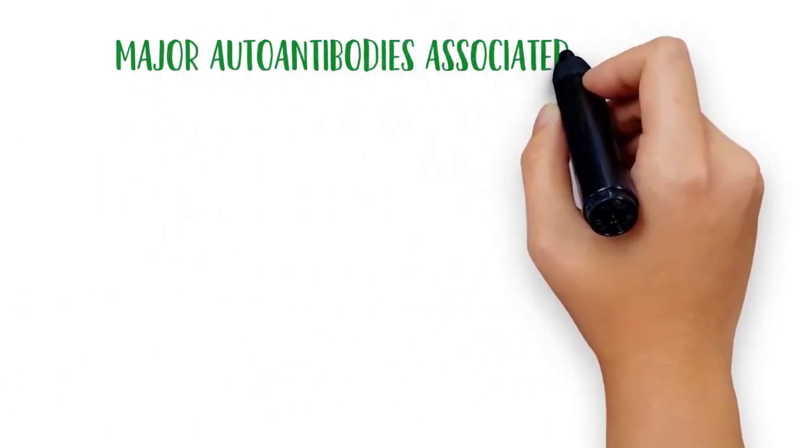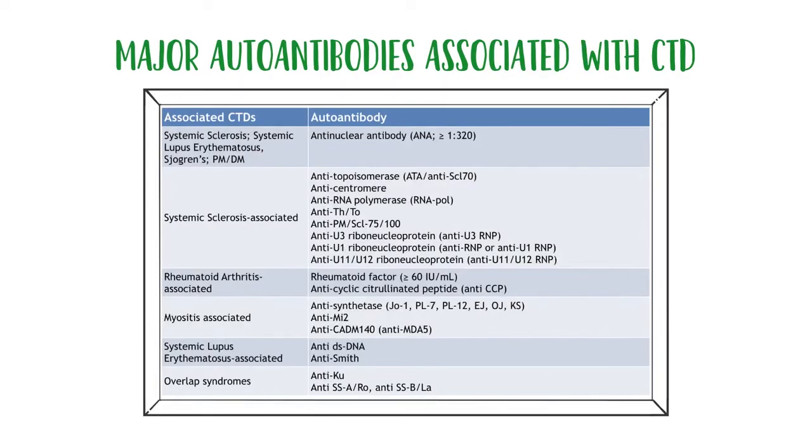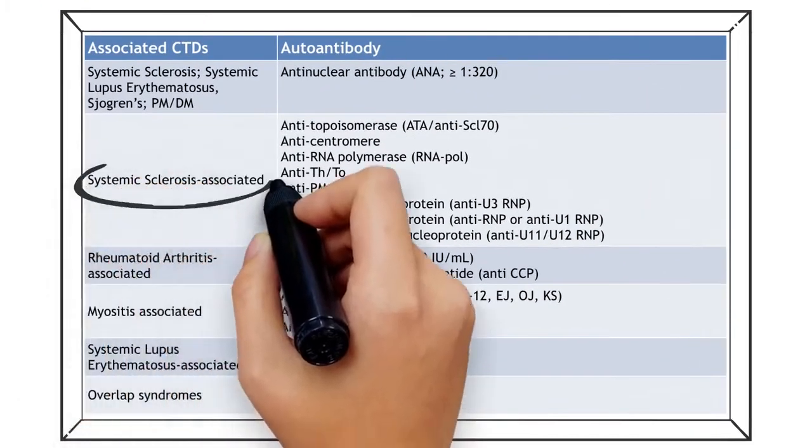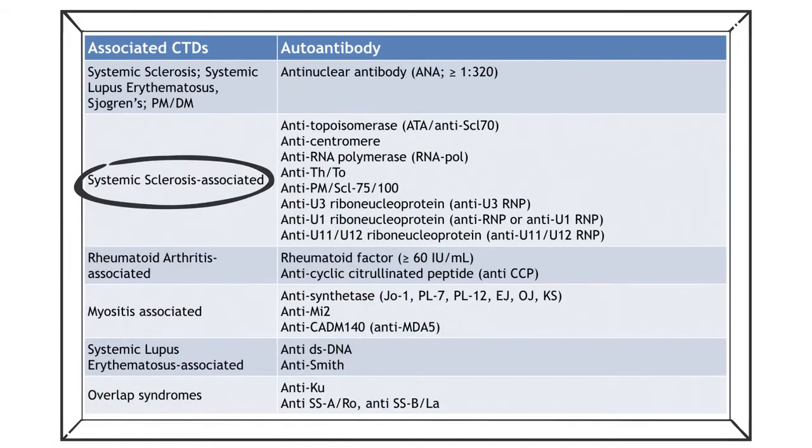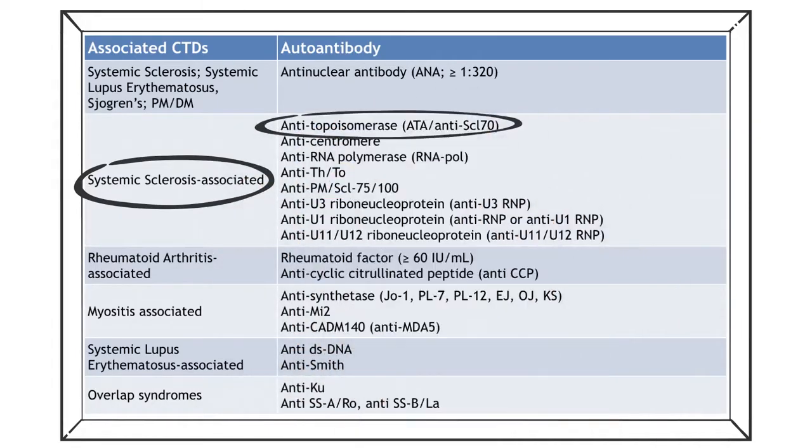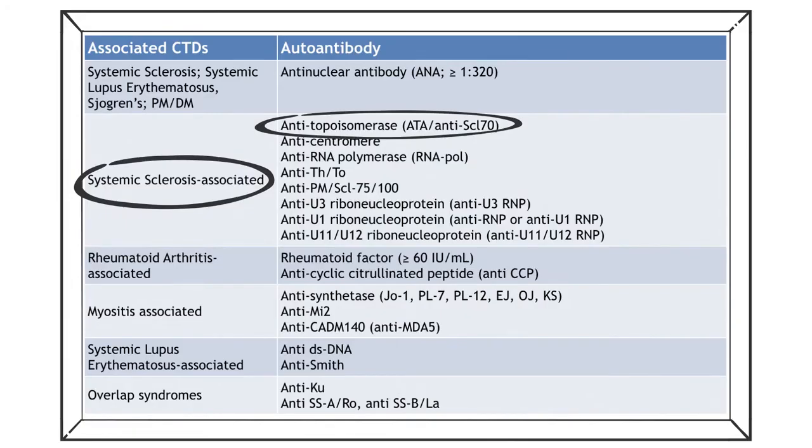The major autoantibodies associated with connective tissue disease are shown here. In systemic sclerosis associated disease, there are several antibodies. The one most common associated with lung disease is SCL-70, the anti-topoisomerase listed at the top. This indeed is most commonly associated with interstitial lung disease. And as you go down the list, you see that there are others associated with other autoimmune or connective tissue associated diseases.